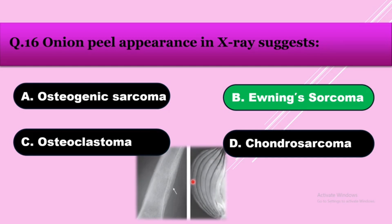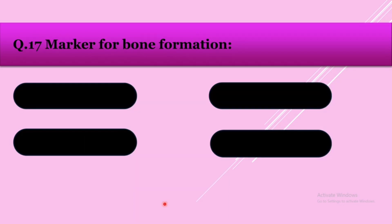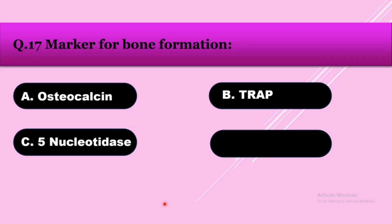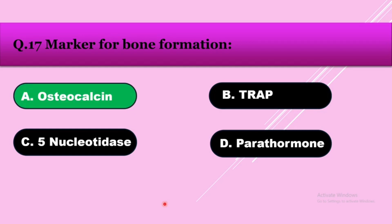The onion peel layers seen in the X-ray are characteristic of Ewing sarcoma. Question number seventeen: Marker for bone formation — option A: osteocalcin, option B: TRAP, option C: 5-nucleotidase, option D: parathyroid hormone. The answer is osteocalcin.